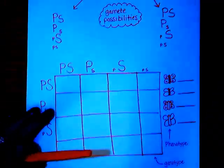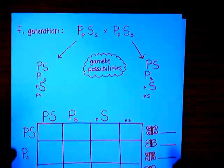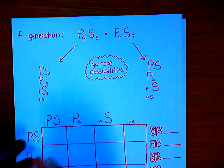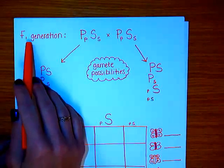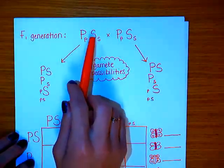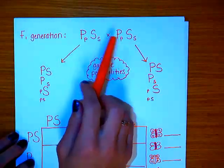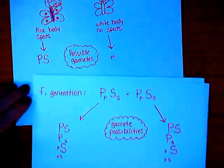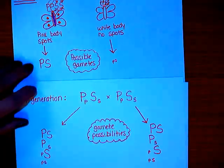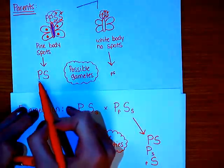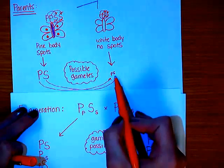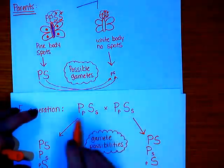Moving on to the next step is figuring out our F1 generation. From those possible gametes, we can find that our first generation is going to be big P, little p, big S, little s crossed with big P, little p, big S, little s. We basically just crossed the gametes — taking big P with little p, and big S with little s — and that's how we end up with the F1 genotype.